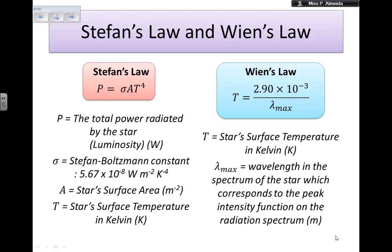Starting with Stefan's law. Stefan's law says that power equals sigma times A times T to the power of 4. So P stands for the total power radiated by the star, so it's going to be the luminosity in watts.